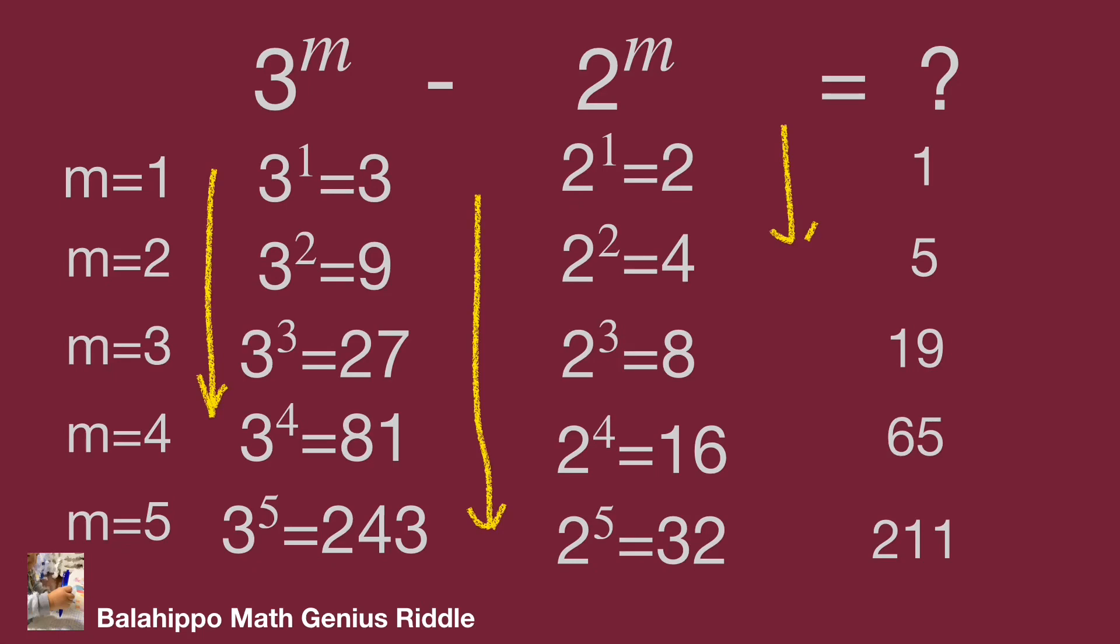while 2 power m equals 2, 4, 8, then 2 power 4 equals 16, and 2 power 5 is 32.